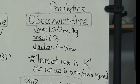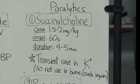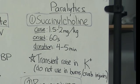Our first paralytic is succinylcholine, or SUX. SUX is a depolarizing paralytic that binds to the motor end plate causing depolarization then relaxation. Clinically, this can manifest as brief fasciculations all over the body before the patient goes limp. Don't panic if you see this — it is a normal consequence of how the drug works.